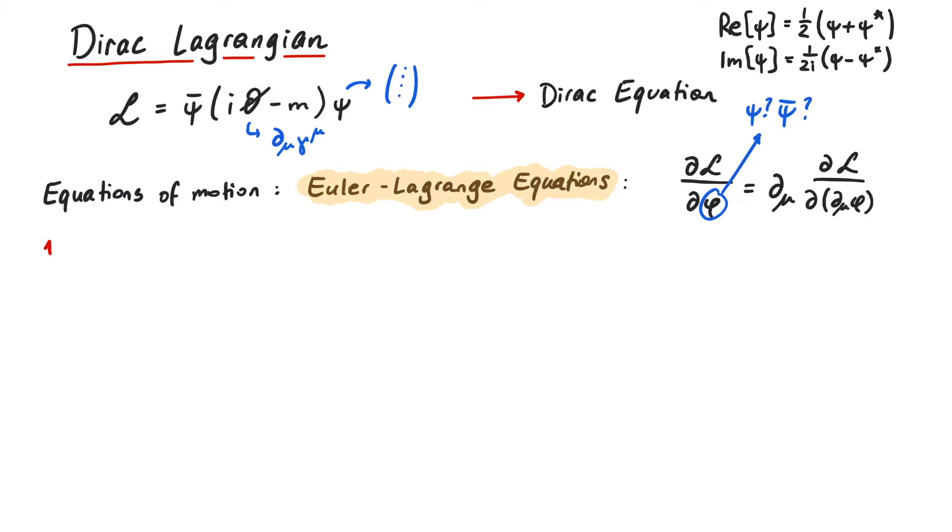Okay, let's do this. First we'll calculate the Euler-Lagrange equation for psi bar. The derivative of the Lagrangian with respect to psi bar is i d slash minus m psi. And the derivative with respect to the derivative of psi bar is zero.